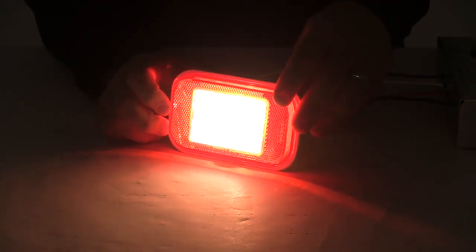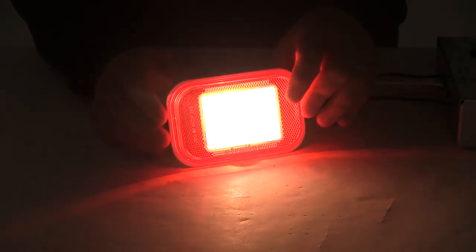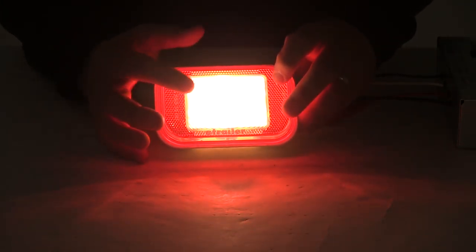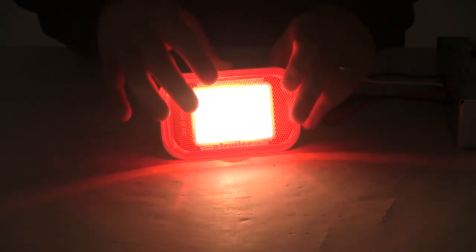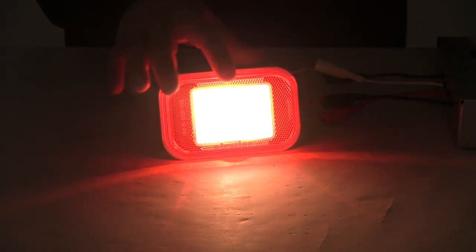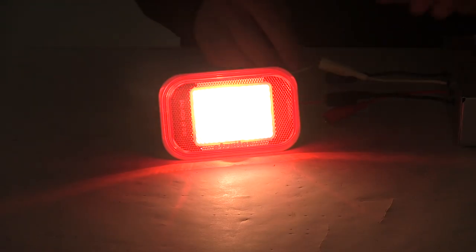And then this is what the light looks like with power running to it. It's a nice bright light. The clear lens in the center allows plenty of light to come through. And then again around the perimeter, you're going to have the red reflex reflector.